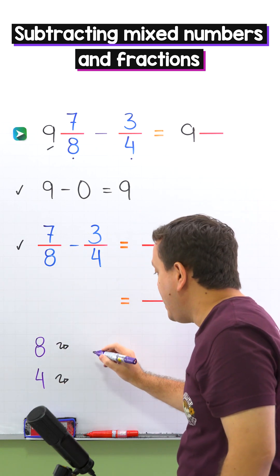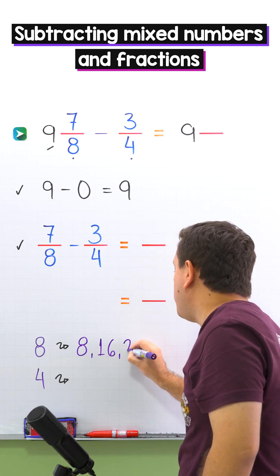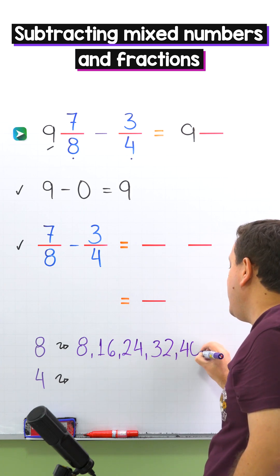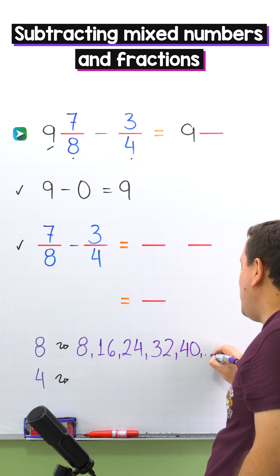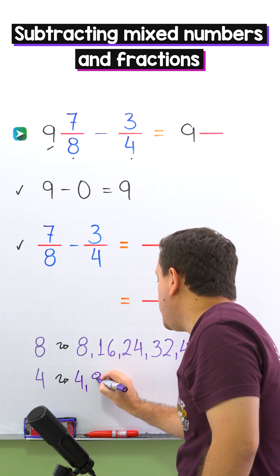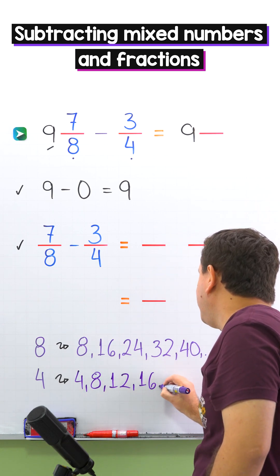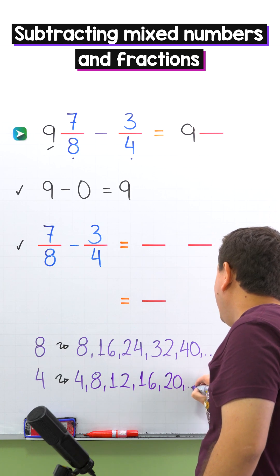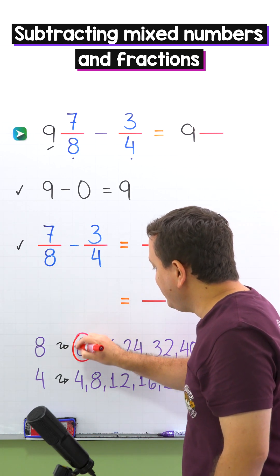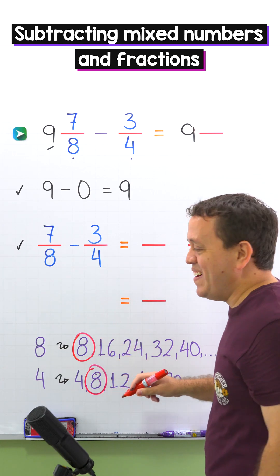The denominators are eight and four. The first multiples of eight are 8, 16, 24, 32, 40, and so on. The first multiples of four are 4, 8, 12, 16, 20, and so on. The smallest number we can find on both lists is eight, so eight is the least common denominator.